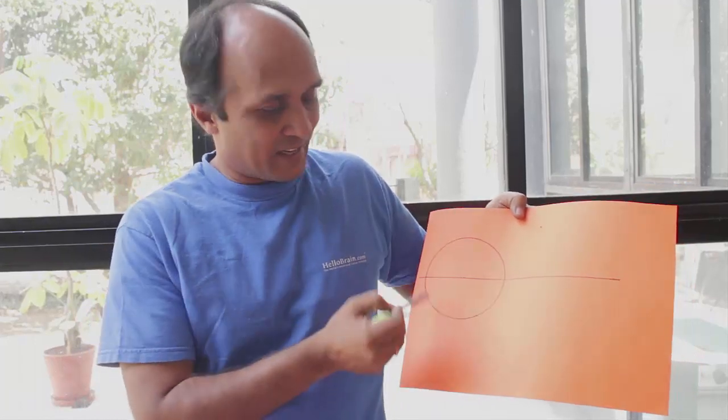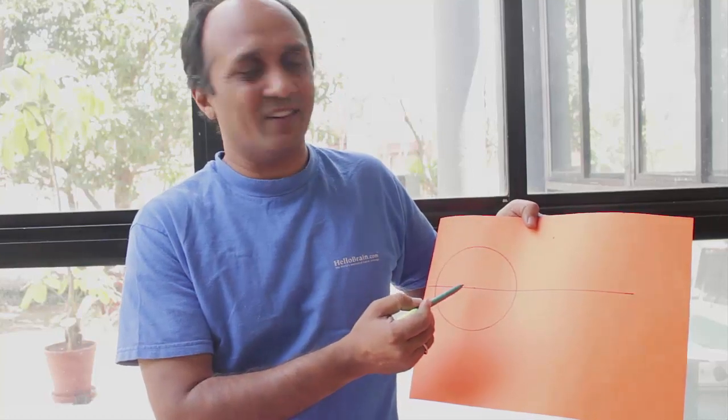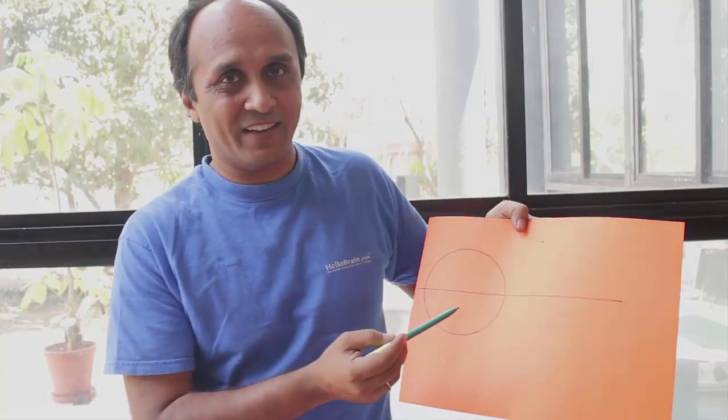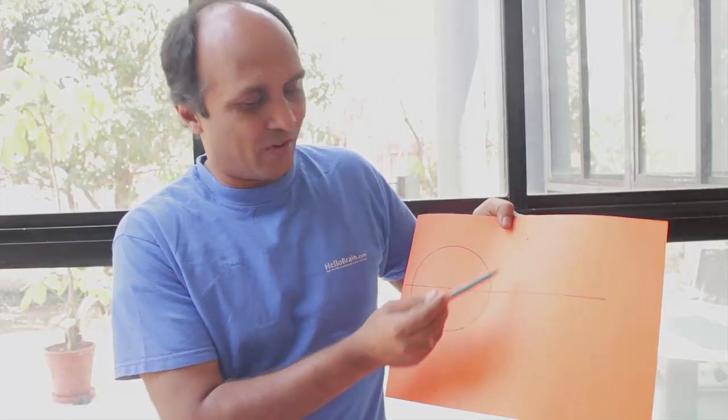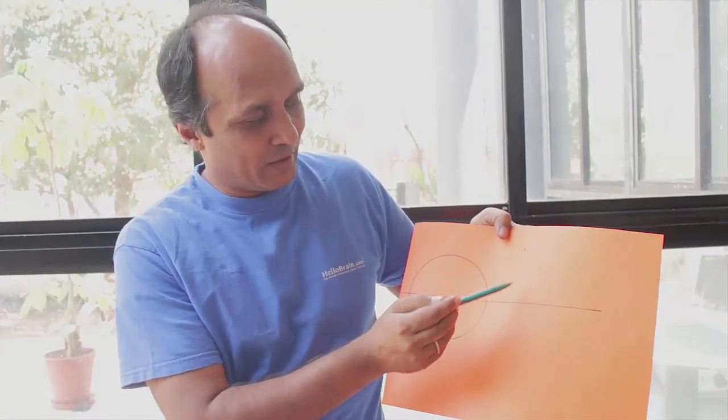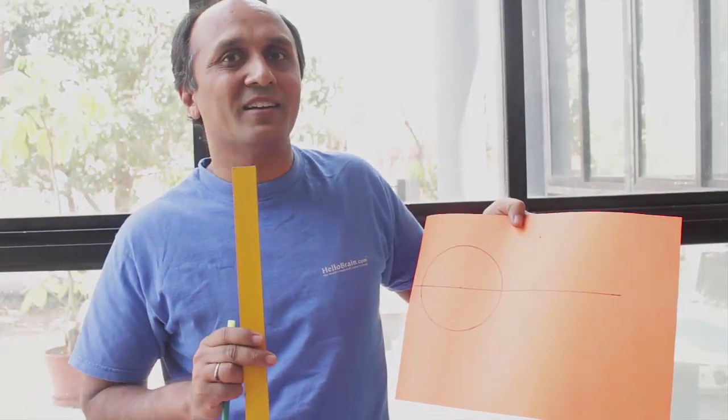What we have on this paper is a circle and then a line passing through the center of the circle, and this is a point here. In this wonderful activity, can you draw a perpendicular from this point onto this line with just an unmarked ruler?